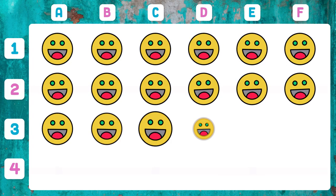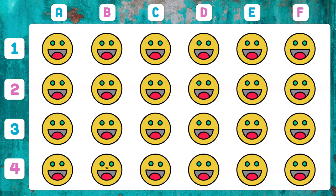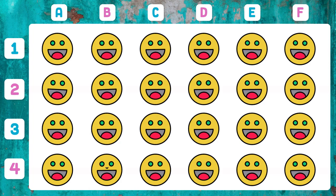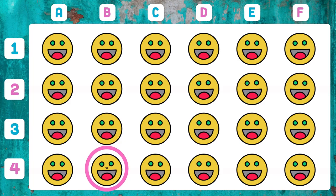What happy face is different from the others — can you distinguish it? The happy face that appears in 4B has a nose, and the rest do not.